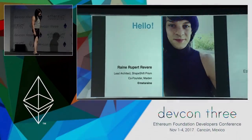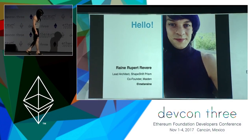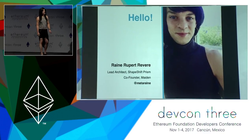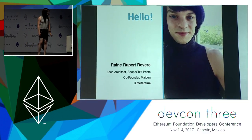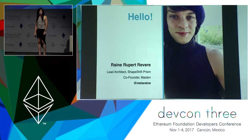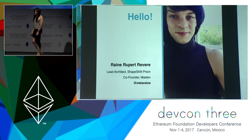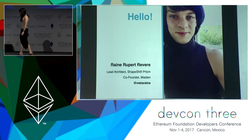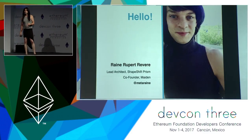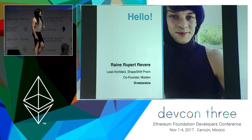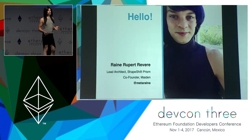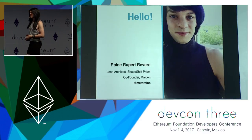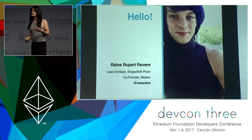My name is Raine Revere and I'm a smart contract developer. I'm the lead architect at ShapeShift Prism and I'm also the co-founder of Maiden. I've been doing smart contract development for a couple of years and our team has learned so much along the way, and it's really an honor to be here and to be able to share some of those lessons with you.